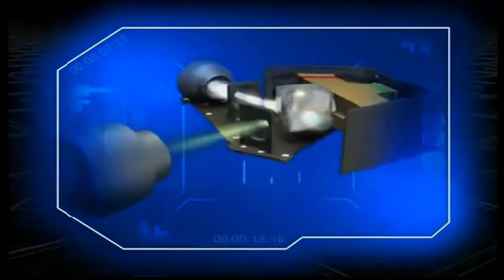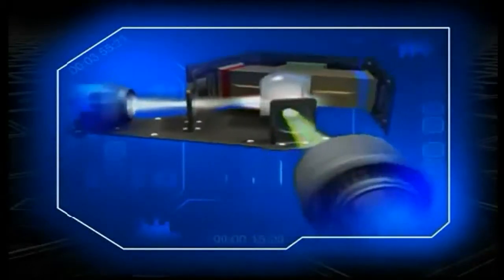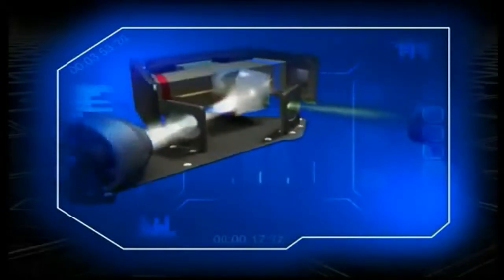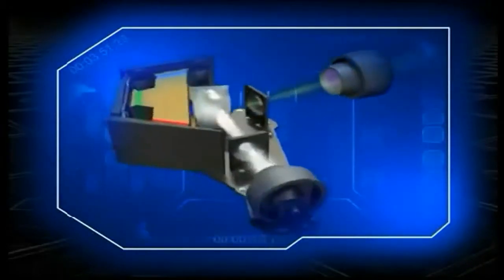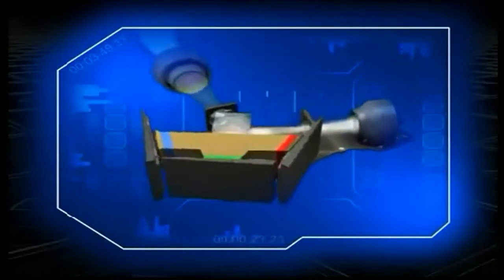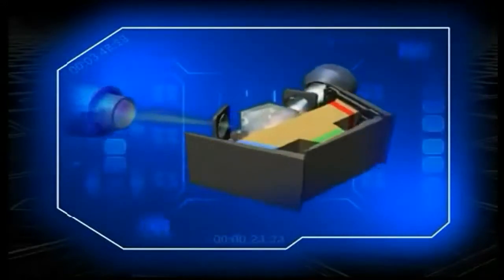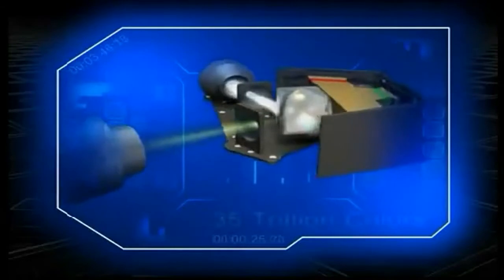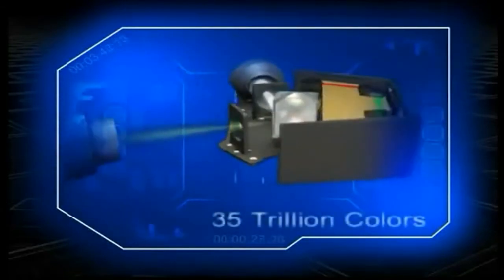Each DLP chip is dedicated to one of these three colors. The colored light that they reflect is combined and passed through a projection lens to form a single pixel on the screen. DLP cinema systems can project no fewer than 35 trillion colors for a movie experience unlike any other.